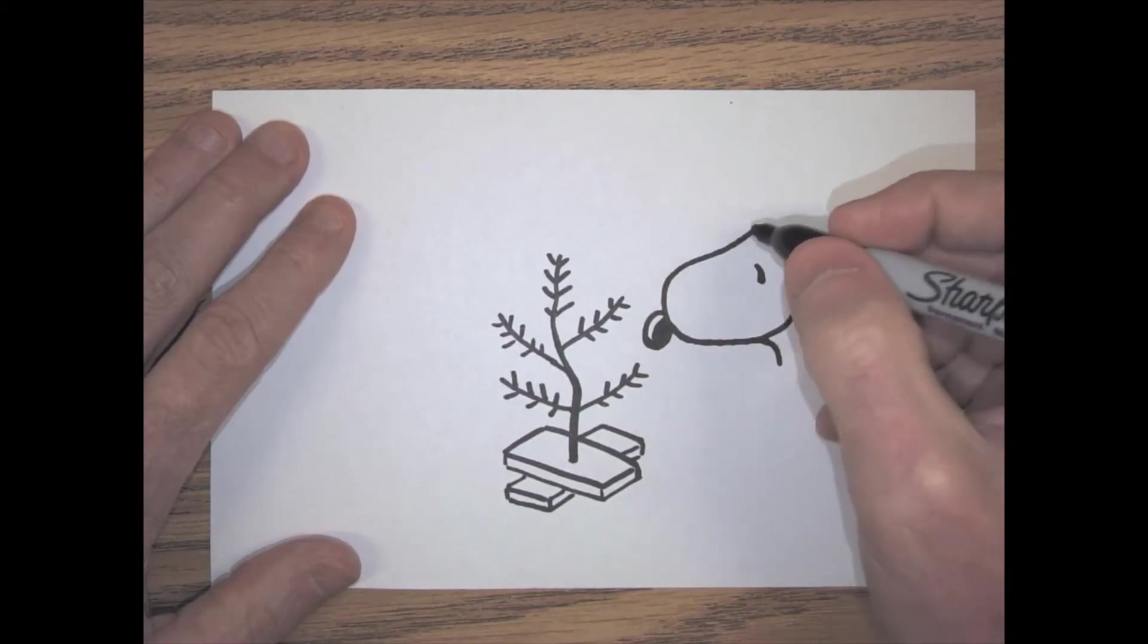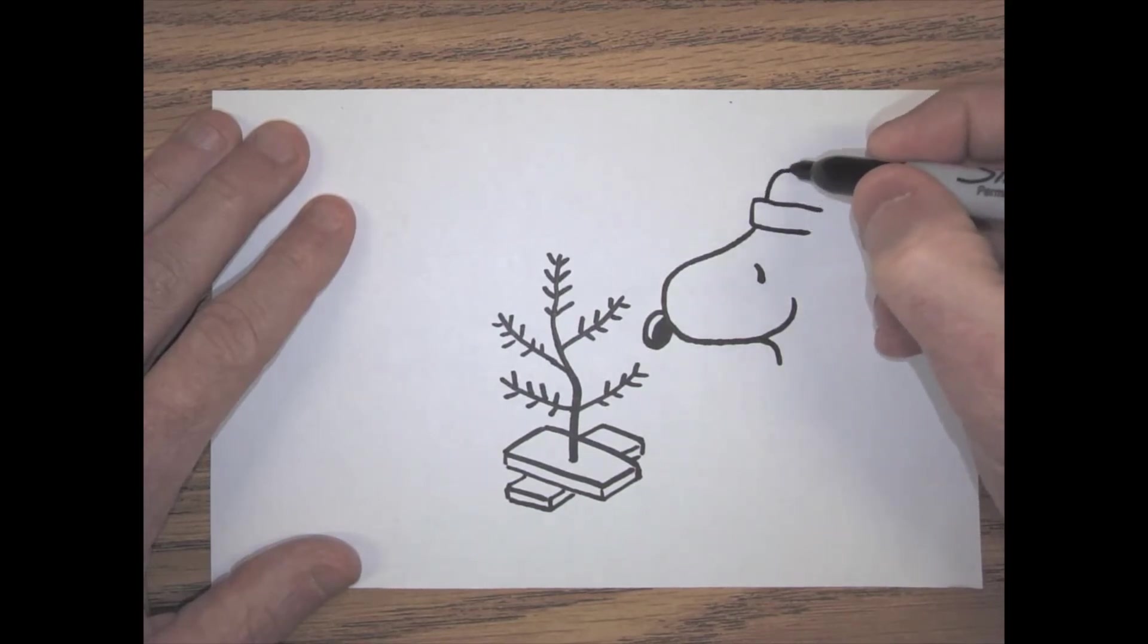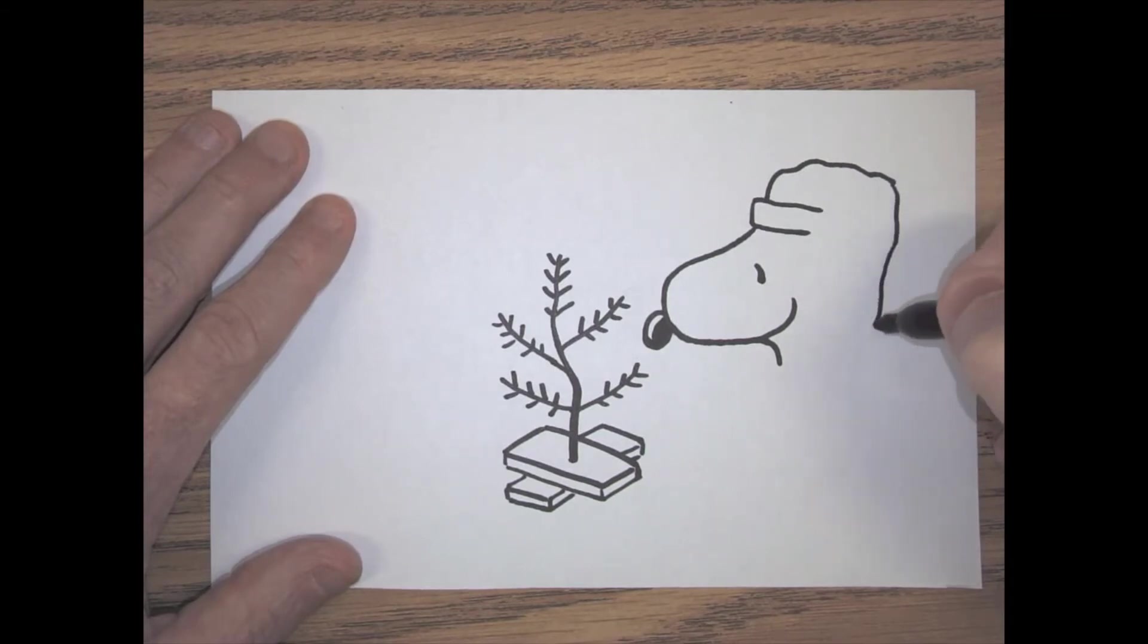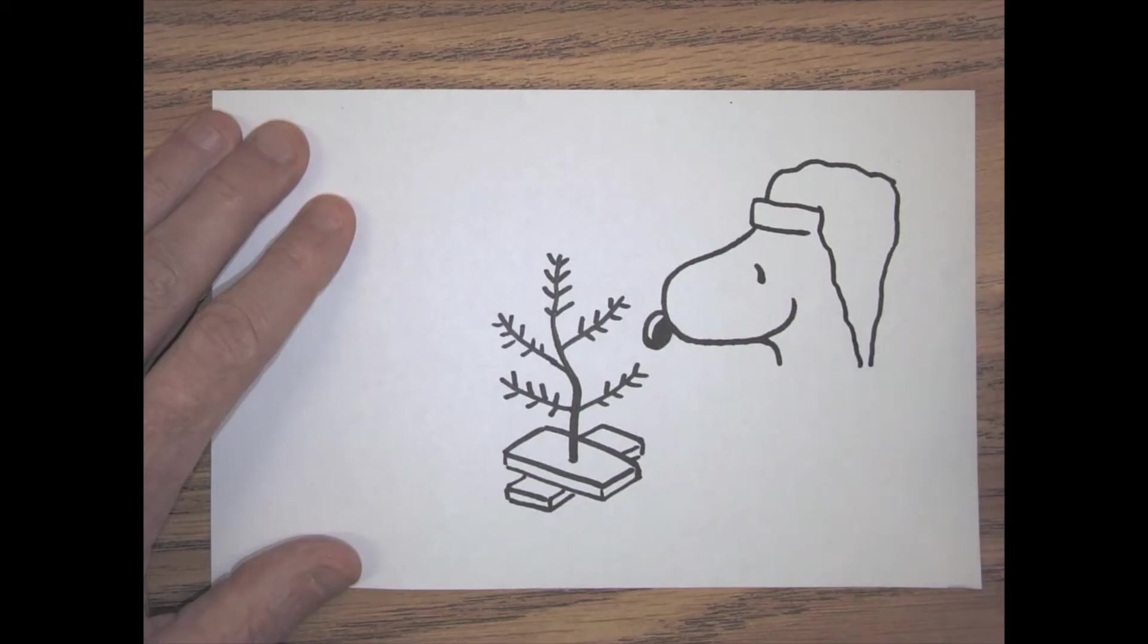Now his hat. His hat in his picture is going to be like this. It's going to go back, and then it's going to go and kind of bump around and stop, and then kind of angle down like that. And then we'll do this, and you can see it's starting to look like a hat and Snoopy. There's a little pom-pom at the end.